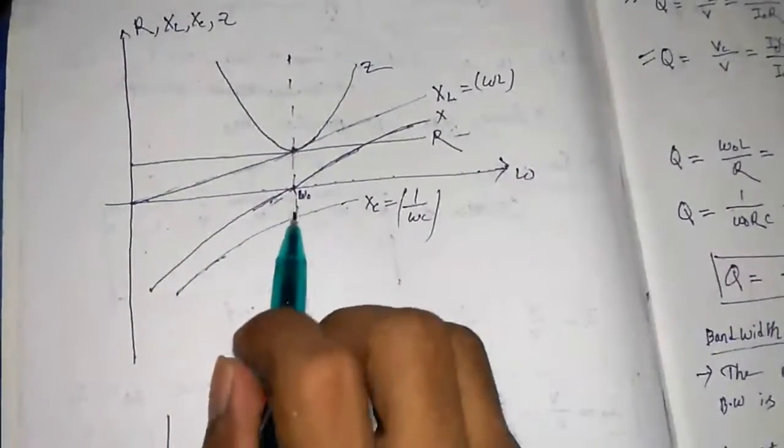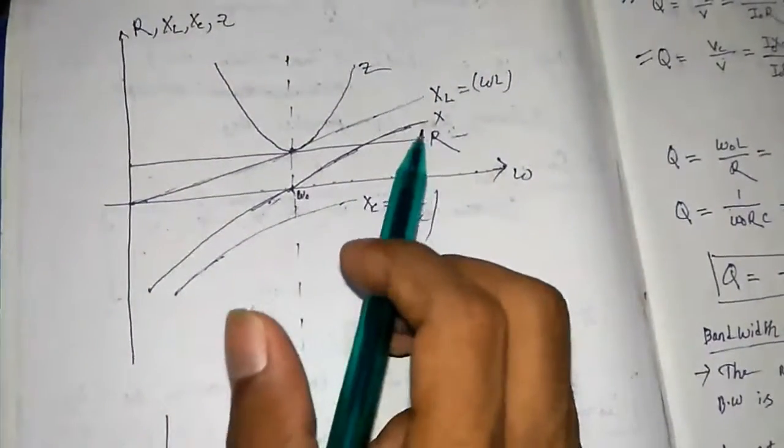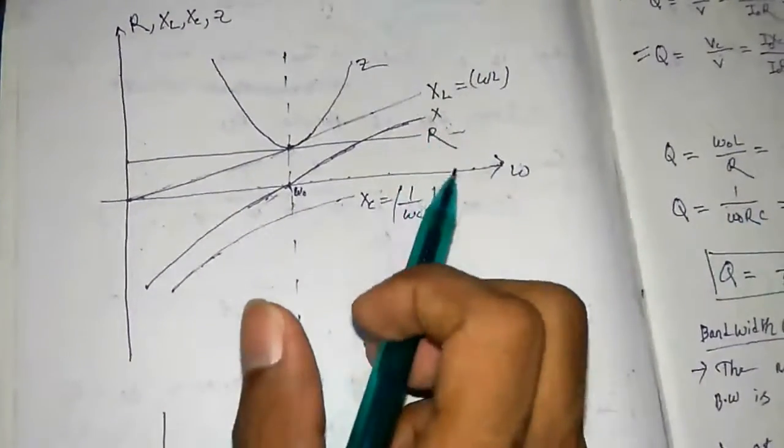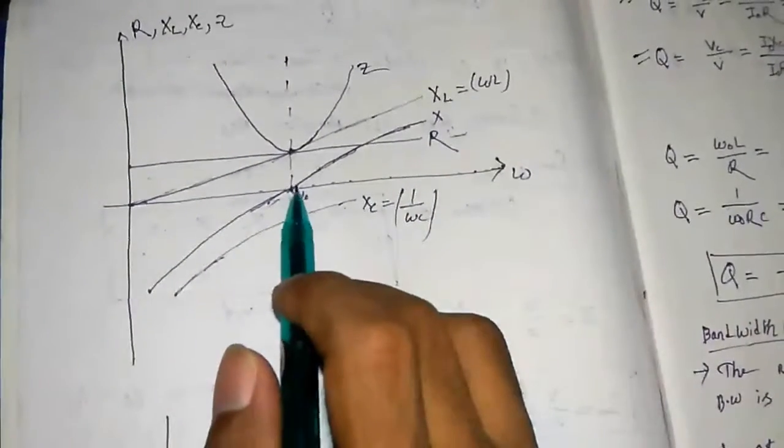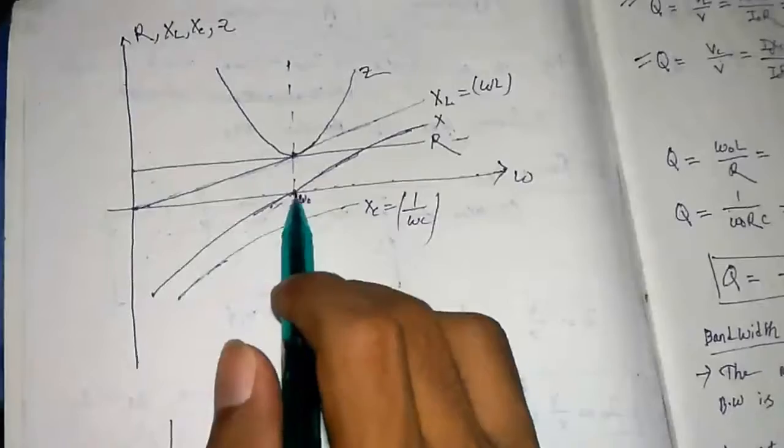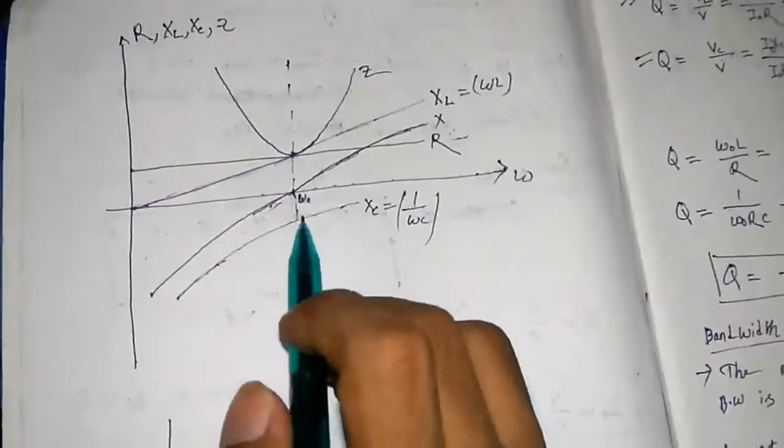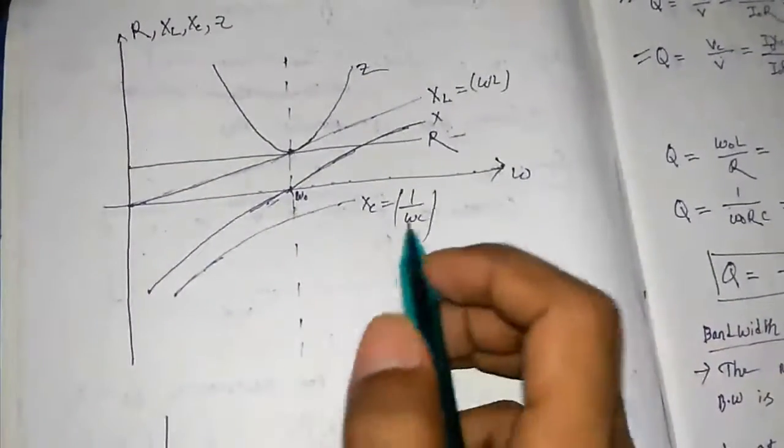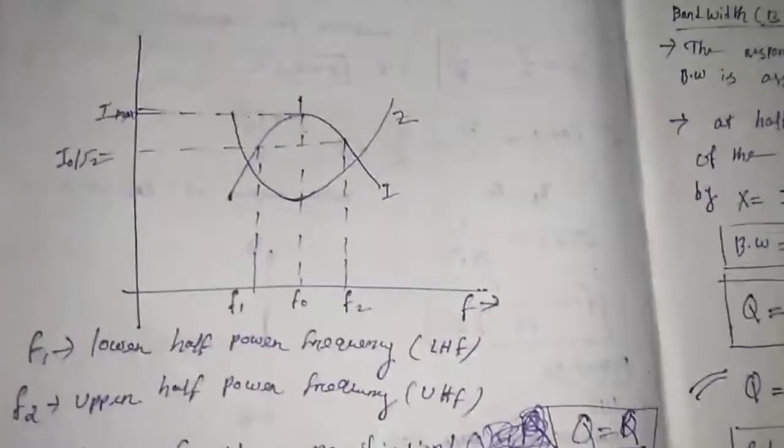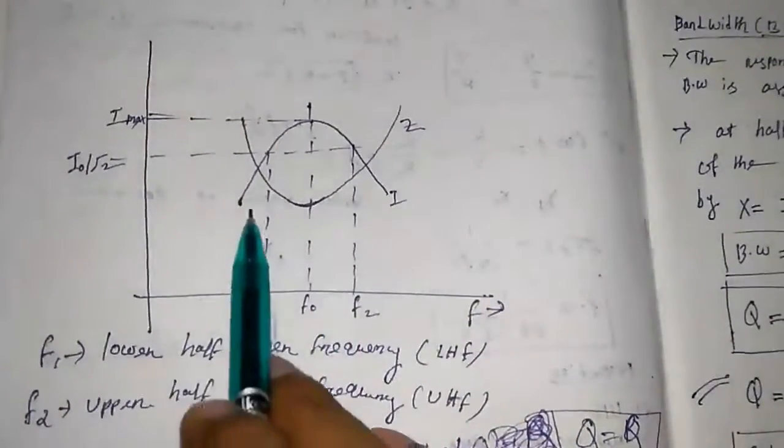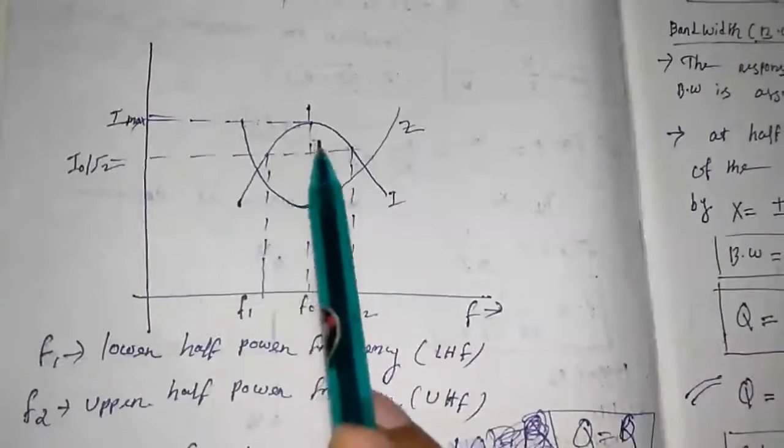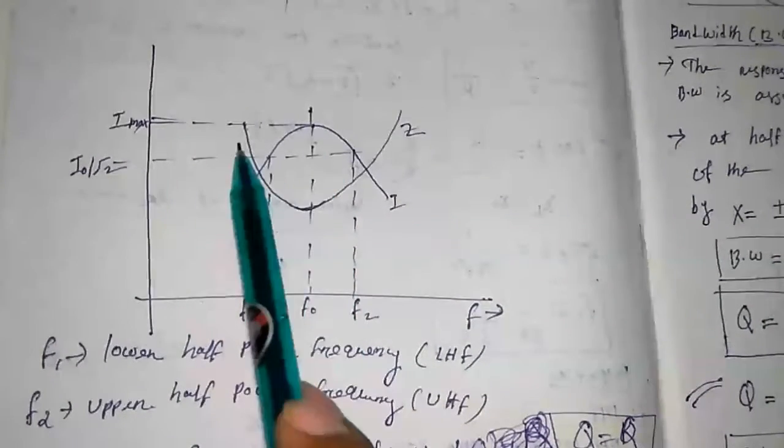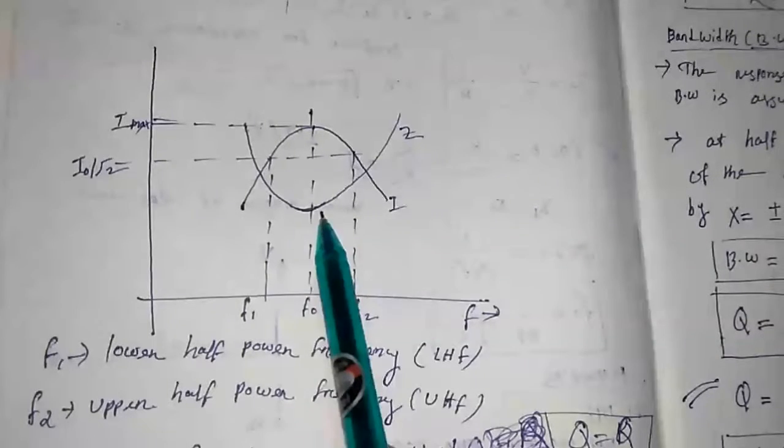Similarly, in case of this X, X is minimum, that is X is zero at resonance frequency. You can see this plot, that at resonance, the current is maximum, where the impedance is minimum.